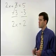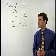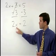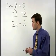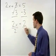And we're left with a situation that is just like the problems in the previous section. To get x by itself, since it's being multiplied by 2, we just divide both sides of the equation by 2.